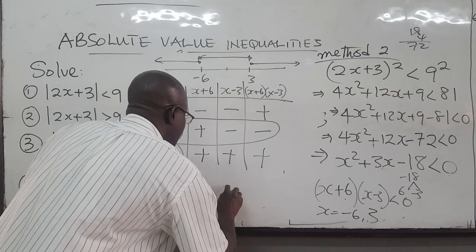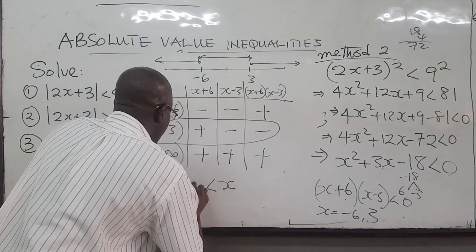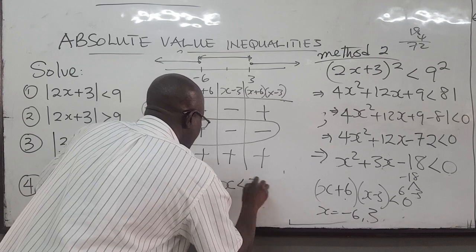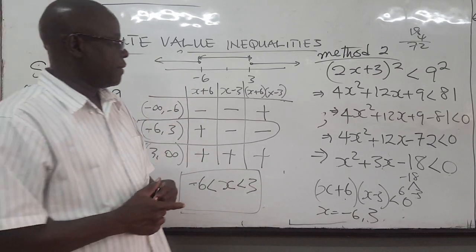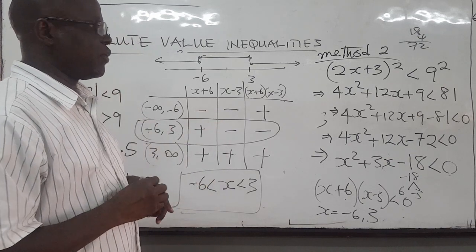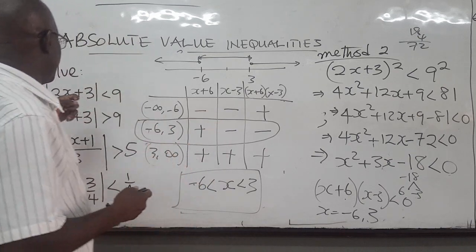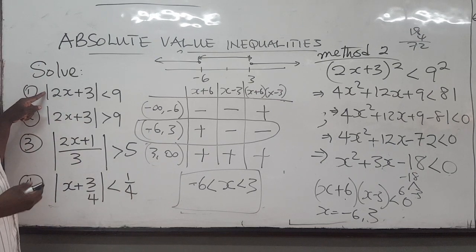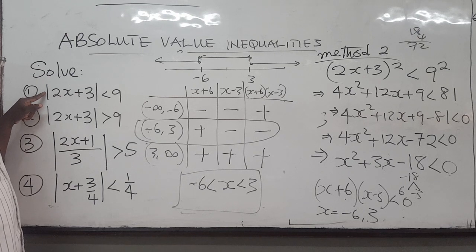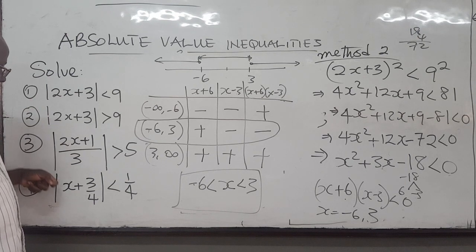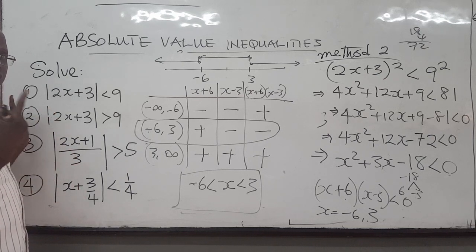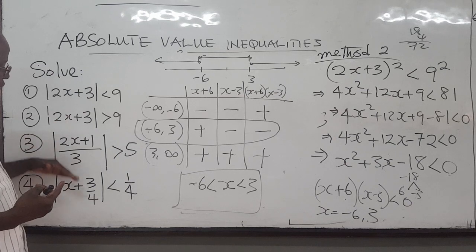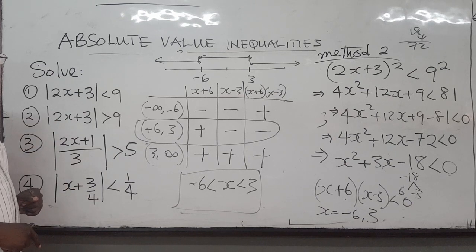So that tells us the solution set is x between negative 6 and 3. These are three separate ways by which you can solve this absolute value inequality. In the subsequent ones I'm just going to use one method and we will solve all the remaining equations.